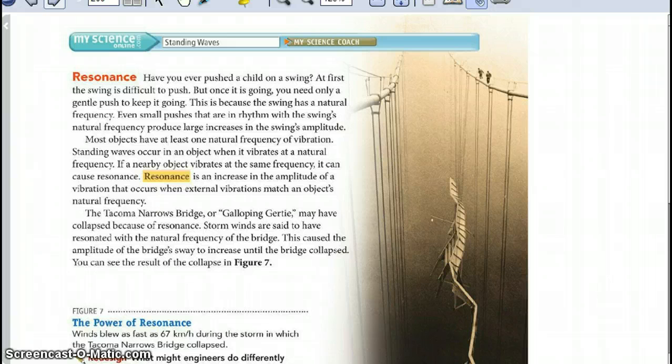The Tacoma Narrows Bridge, or Galloping Gertie, may have collapsed because of resonance. Storm winds are said to have resonated with the natural frequency of the bridge. This caused the amplitude of the bridge's swaying to increase until the bridge collapsed. You can see the results of the collapse in figure 7.